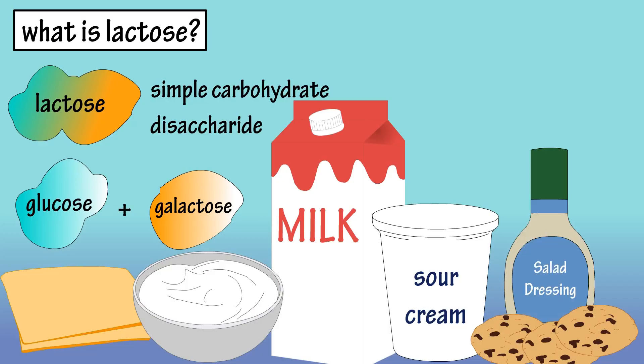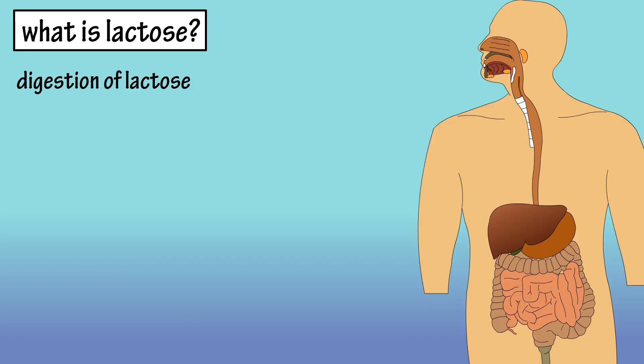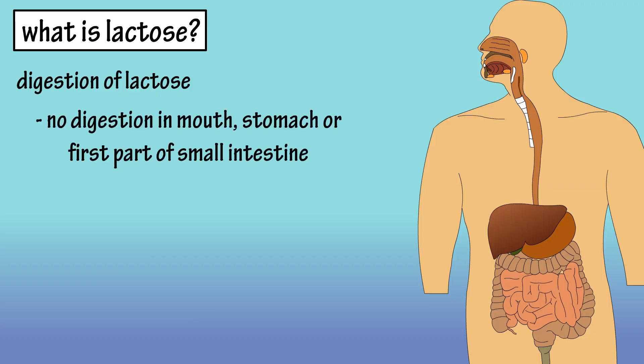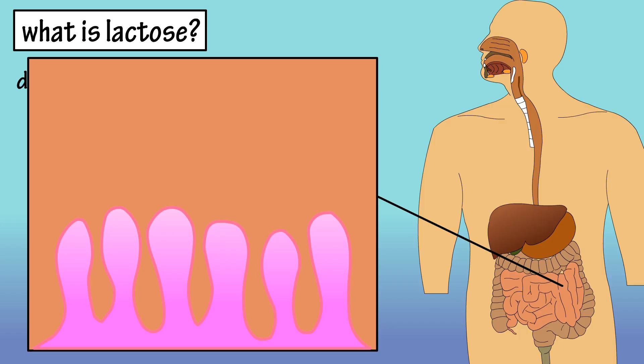After we eat foods that contain lactose, our body has to digest and absorb it. Virtually no digestion of lactose takes place in the mouth, stomach, or first part of the small intestine. Digestion of lactose takes place within the microvilli in the upper small intestine.